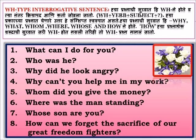Let us see some examples of WH type interrogative sentences. The first example is 'What can I do for you?' — 'What' is the WH word, 'can' is the verb, 'I' is the subject, followed by the question mark. The second example is 'Who was he?' — the same formula: WH plus helping verb plus subject plus question mark.